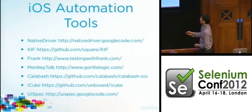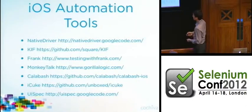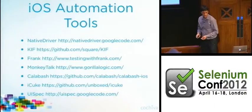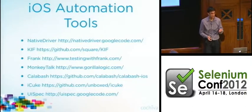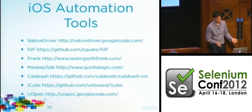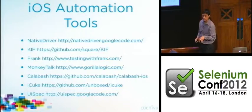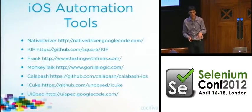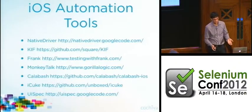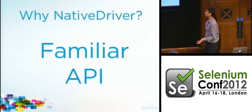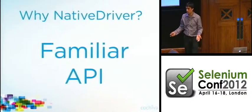I started taking a look at a bunch of tools available — this list includes some things that weren't available when I first started looking. You have KIF from the folks at Square, Frank is another very popular one, and Calabash is quite new but seems to have a lot of traction. I took a look at everything out there and ended up going with a project called Native Driver. There was a lightning talk about Native Driver at the last Selenium Conference — it's basically an implementation of the WebDriver API that allows you to drive native mobile applications.